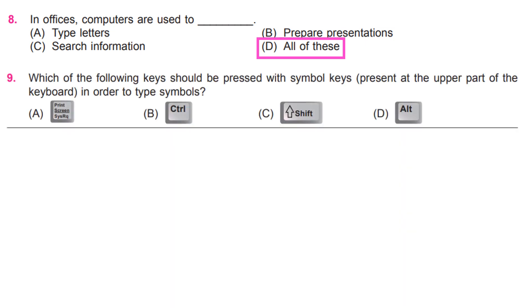Which of the following keys should be pressed with symbol keys present at the upper part of the keyboard, in order to type symbols? C. Shift key.